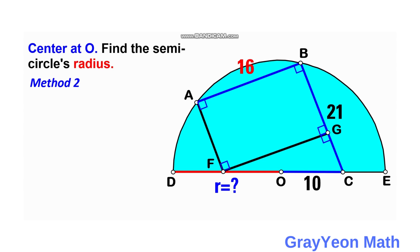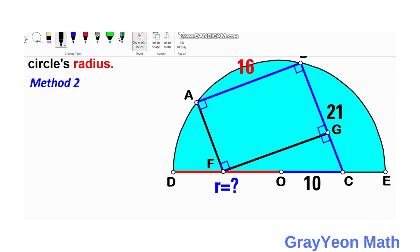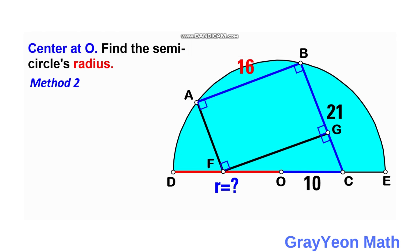Next we draw another line that is the perpendicular bisector of segment AB from that midpoint to the center O. We form a trapezoid AFGCB, and the line we just drew is the median of this trapezoid because it is the perpendicular bisector. So this half-length is 8 and the other is 8. Since OC is 10, this corresponding length in the median is also 10.